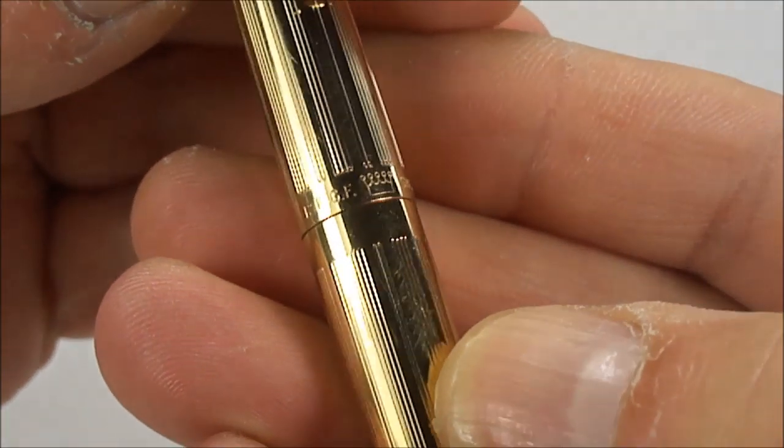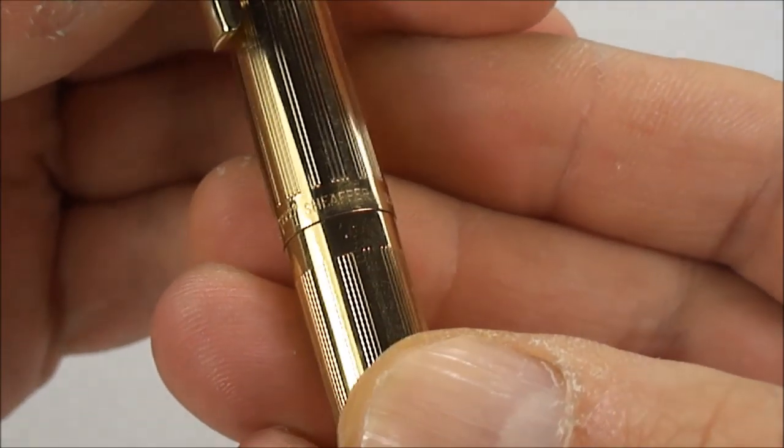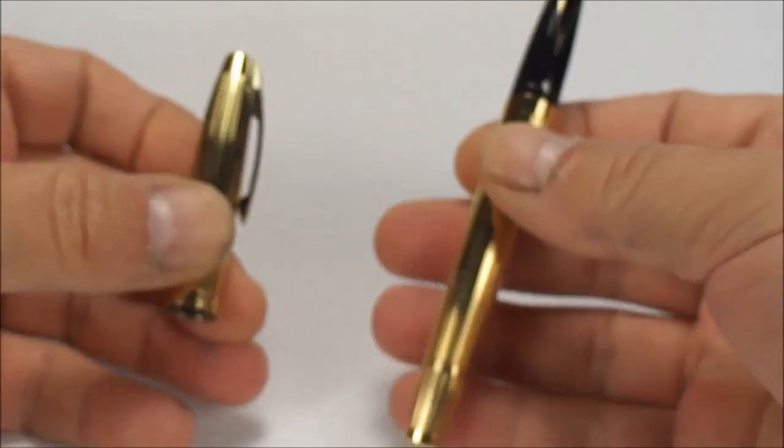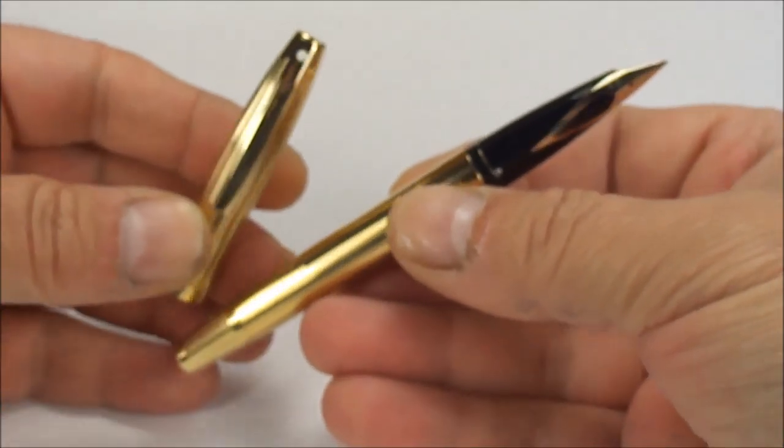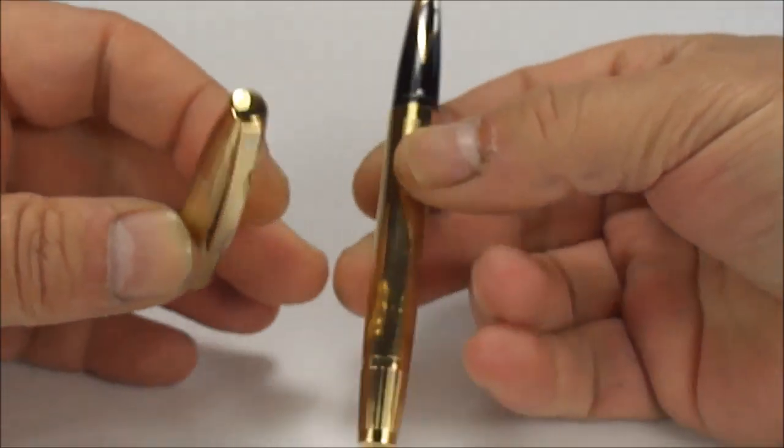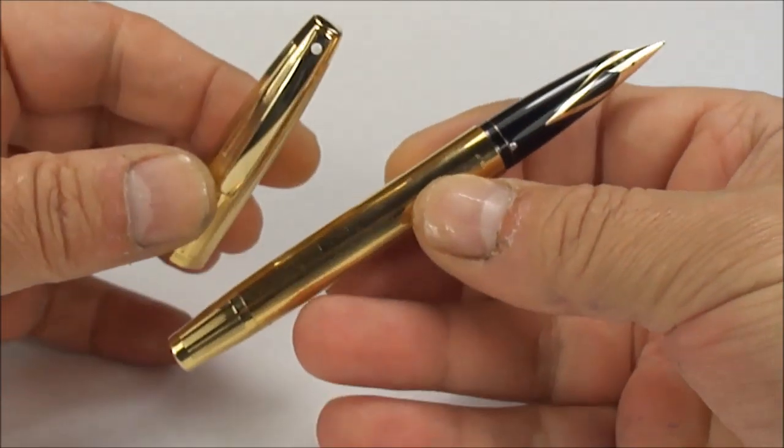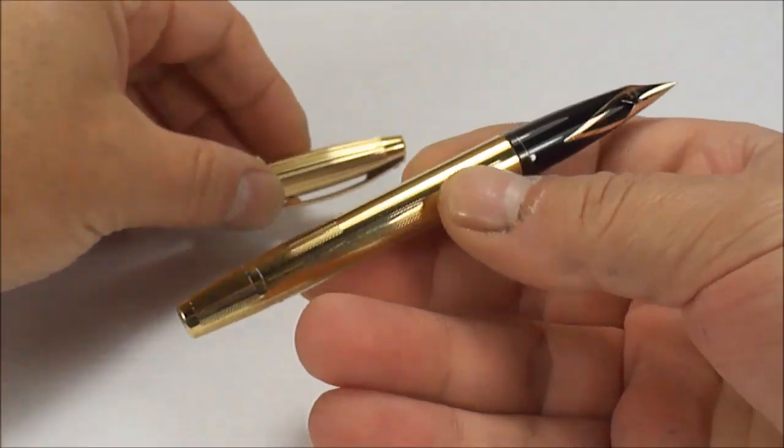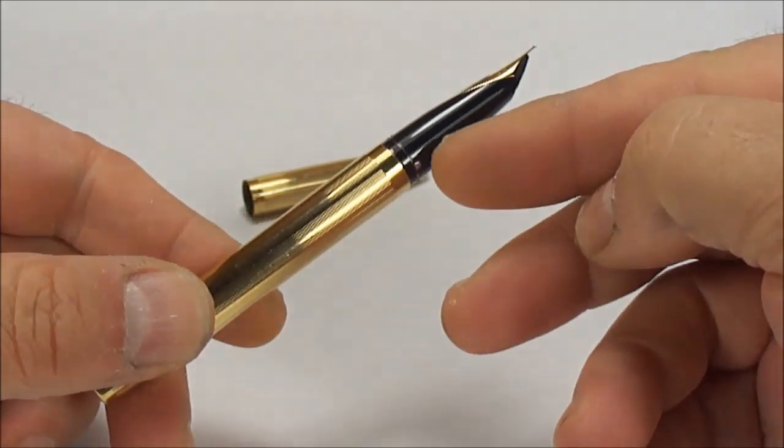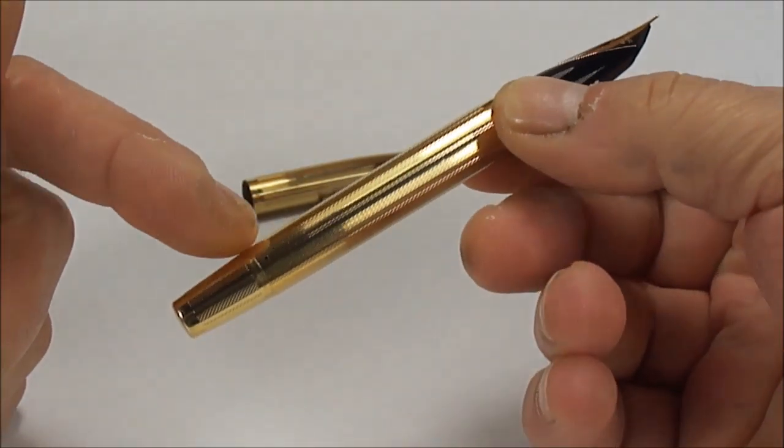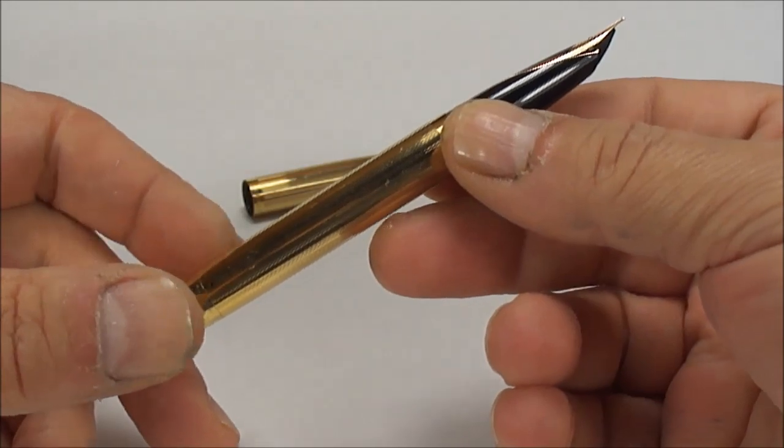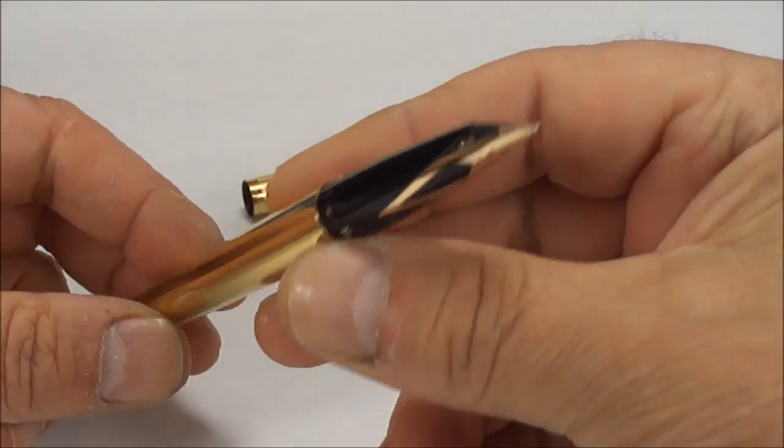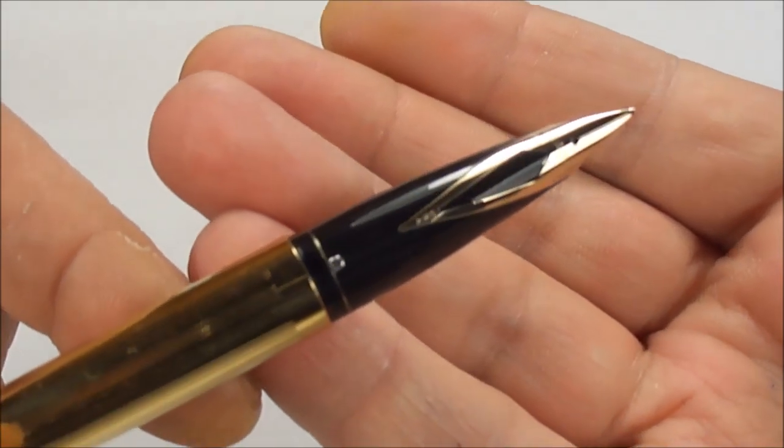So a lovely cap imprint there. If we take the cap off, which simply just pushes on and off, let's give you a twirl of the pen and the cap together. A lovely example. What I've done is fully serviced it. I've put new point seals, a new o-ring inside, and a new sack in the pen. So as we'll show you in a moment, it should be in full working order.